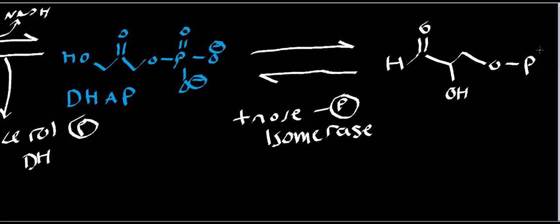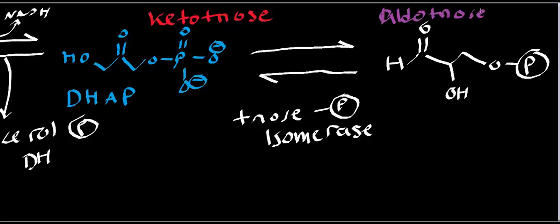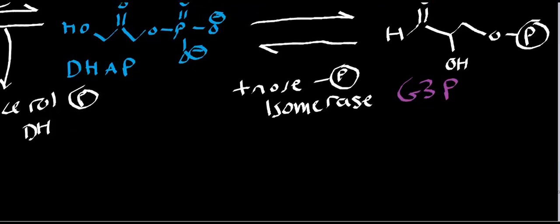What have we seen? Well, this one right here is the keto triose, and this guy over here is the aldo triose. Essentially they're constitutional isomers of each other. The dihydroxyacetone phosphate is the keto triose, and glyceraldehyde 3-phosphate - or we can abbreviate it G3P - is the aldo triose.